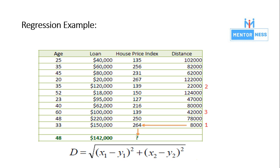Here is an example of regression. We have four features: age, loan, house price index, and distance. We can calculate the regression using a distance formula shown in the example. We calculate all the house price index values and then find their average to determine the regression. Thank you.